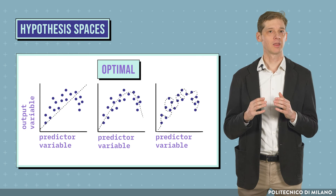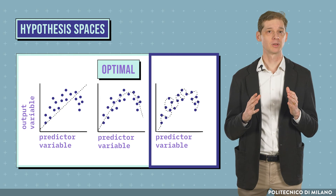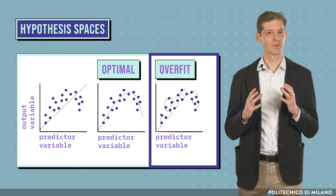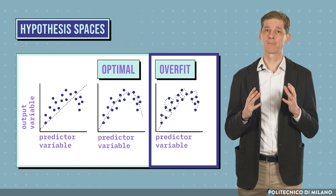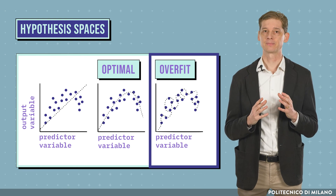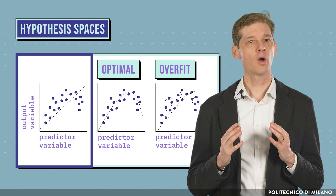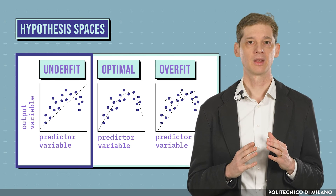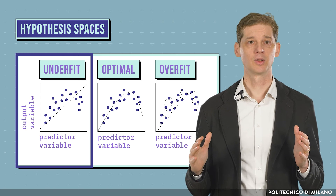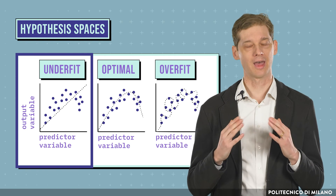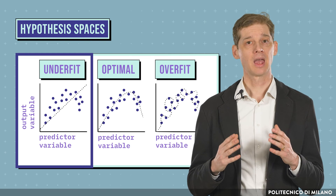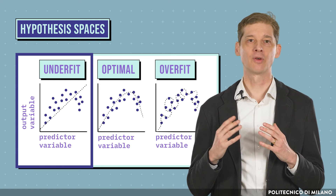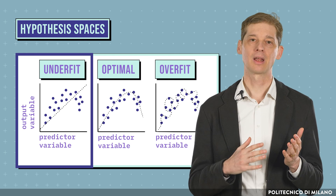If we consider hypothesis spaces that are too large with respect to the number of samples, we run the risk of overfitting the data — that is, learning very complex functions that explain the training data very well but are unable to generalize. On the other hand, if we focus our search on a too small hypothesis space, we run the risk of underfitting, learning models that are too simple to explain the behavior of the unknown function f. Any supervised learning technique has one or more hyperparameters that can be used to find the proper balance and avoid both underfitting and overfitting.